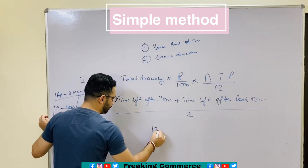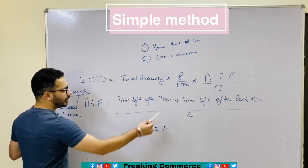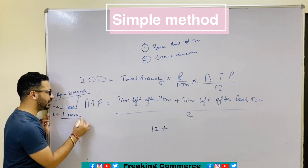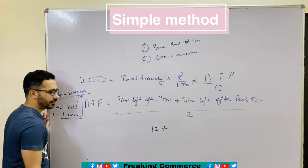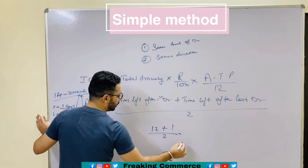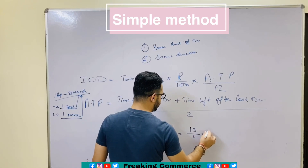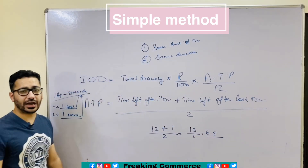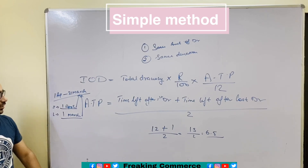Time left after first drawing: from 1st April to 31st March is 12 months. Plus time left after last drawing: last drawing is 1st March, so from 1st March to 31st March is 1 month. Divided by 2, that is 13 divided by 2, which equals 6.5. So this is your average time period.